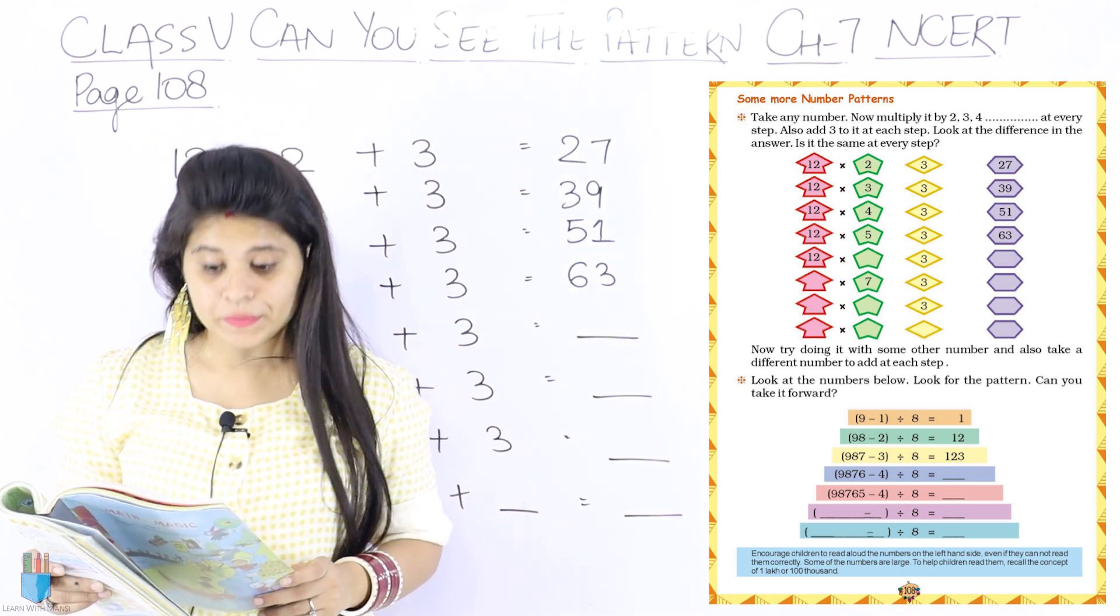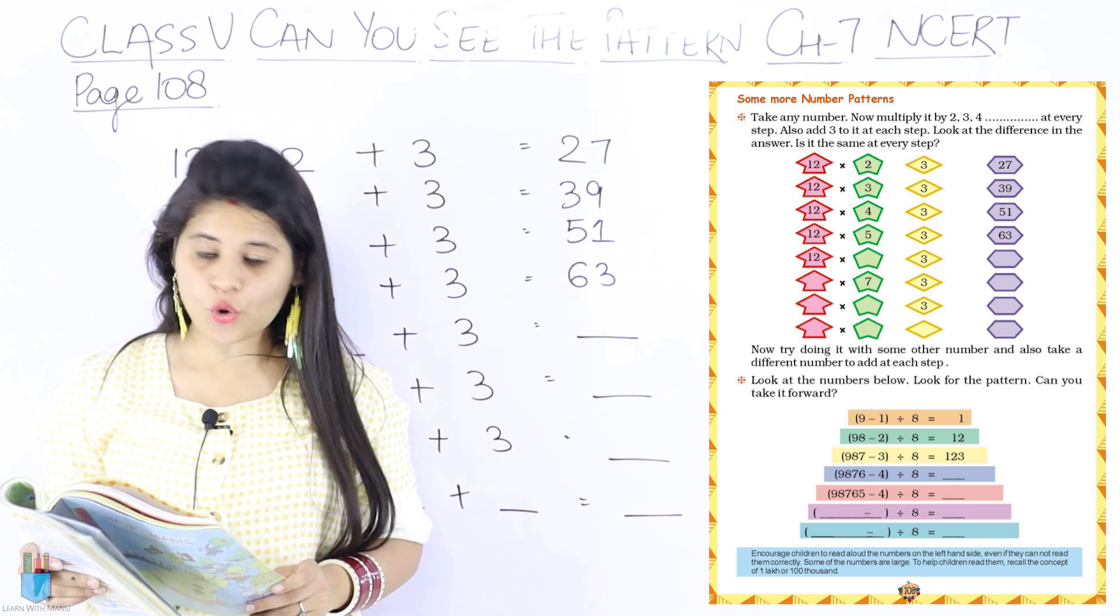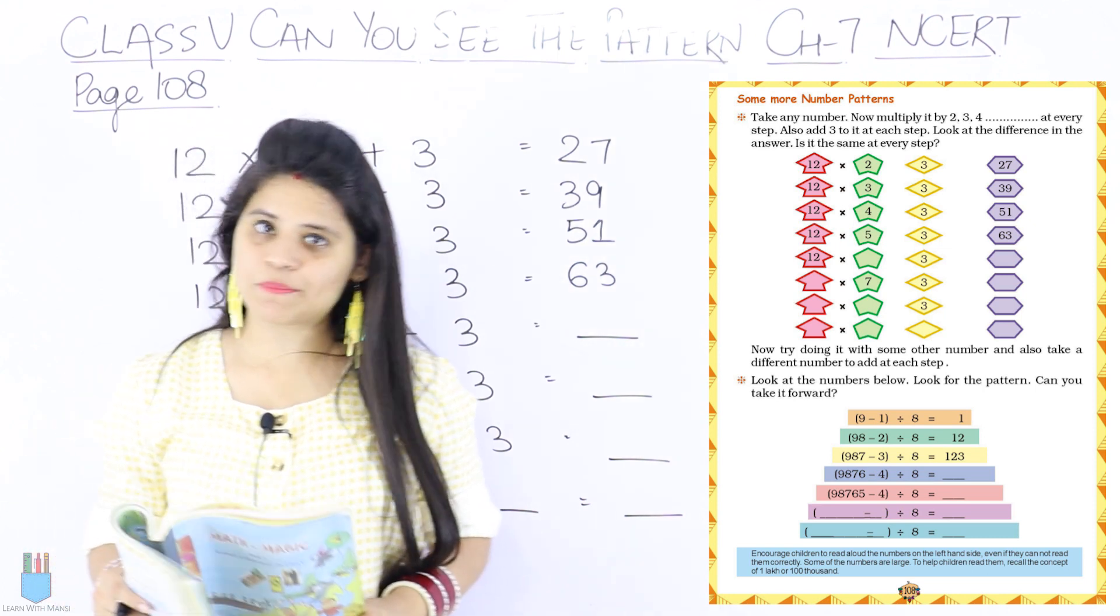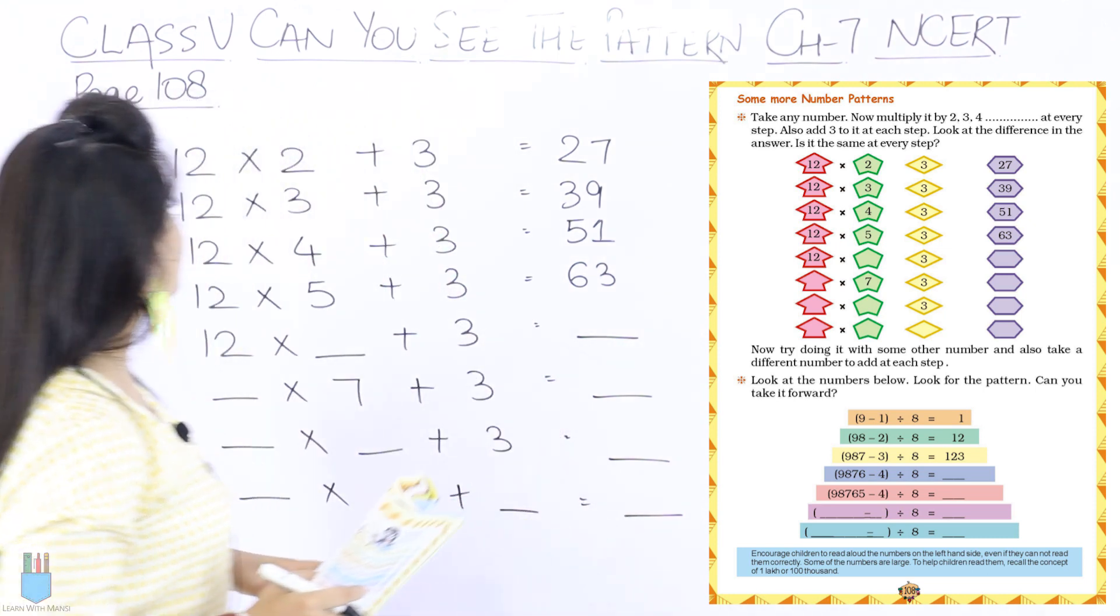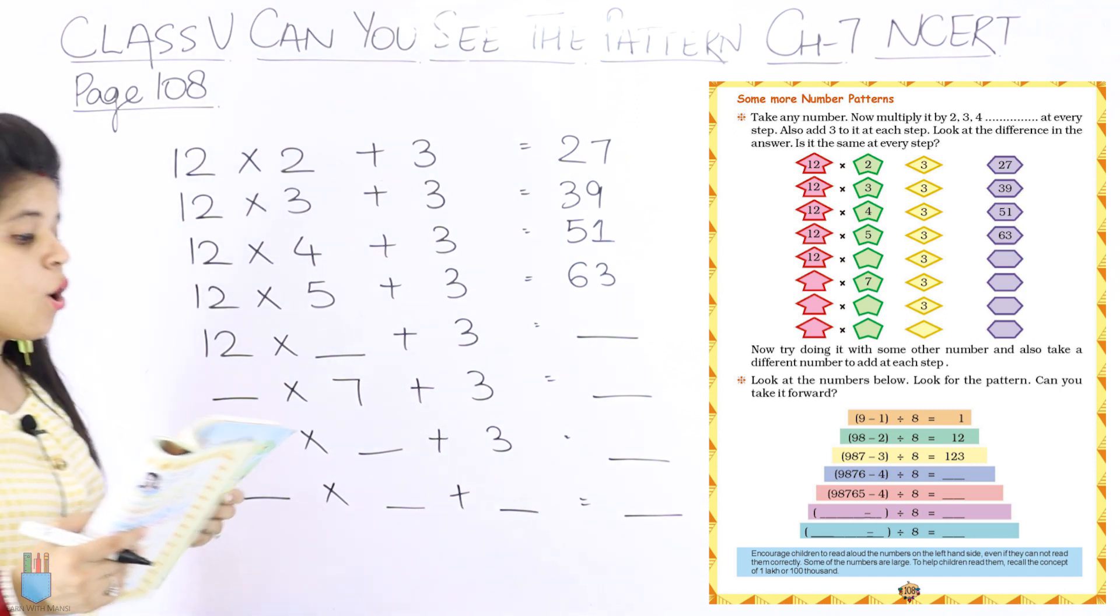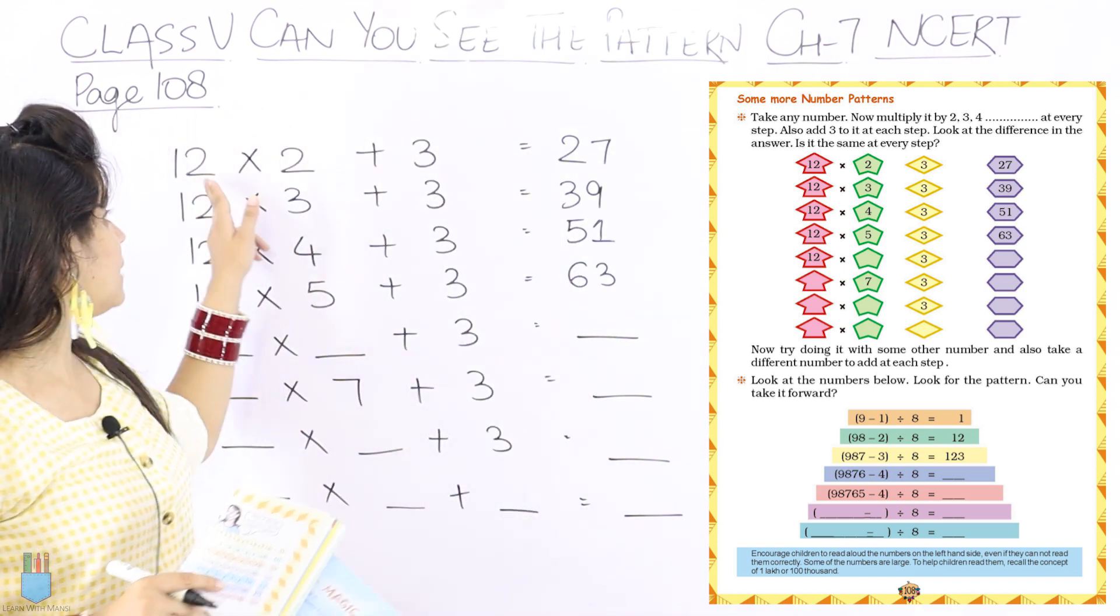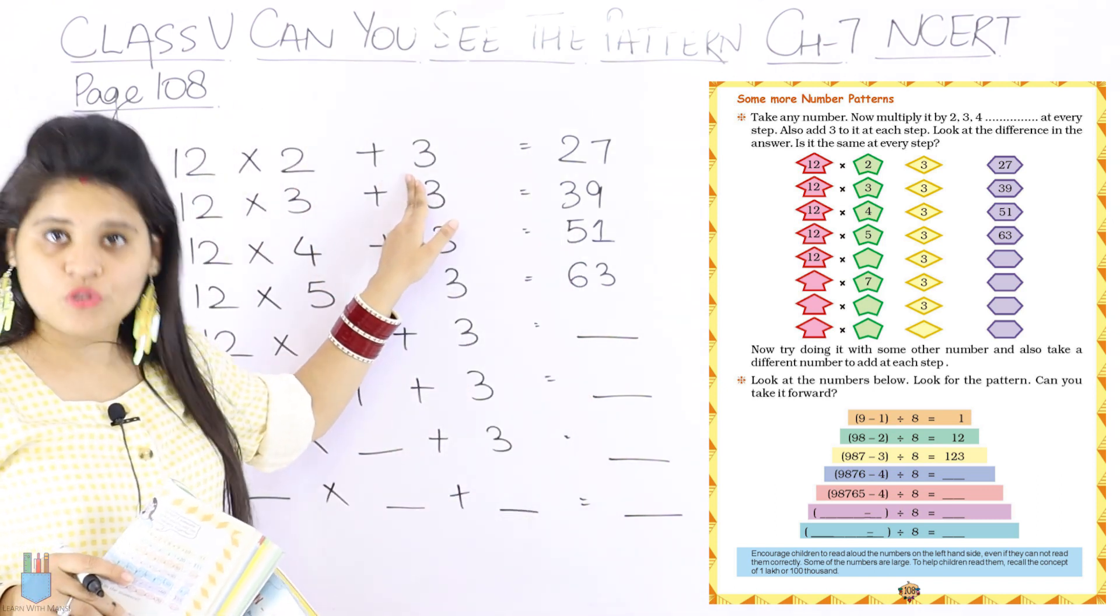Take any number, now multiply it by 2, 3, 4, and so on at every step. So you have a number like here, 12, and multiply it by 2, 3, 4, 5, 6, 7, and so on. Add 3 at every step. So multiply it and add 3.